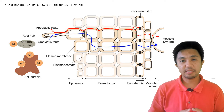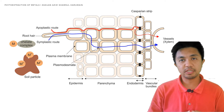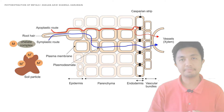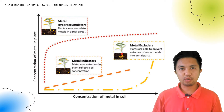While in the apoplastic route, the metal ions will travel through the spaces between cells towards the xylem. Plants can be categorized into three groups on the basis of their metal uptake strategy.